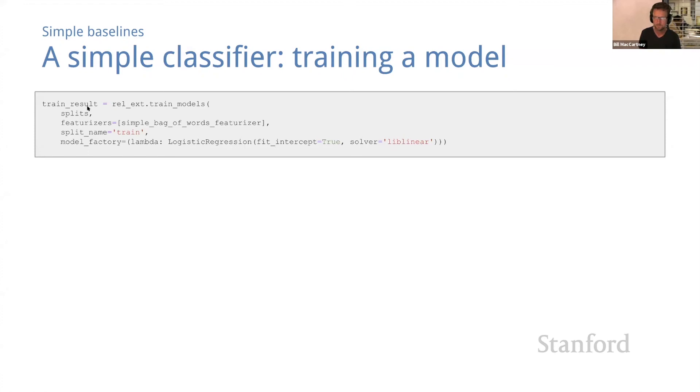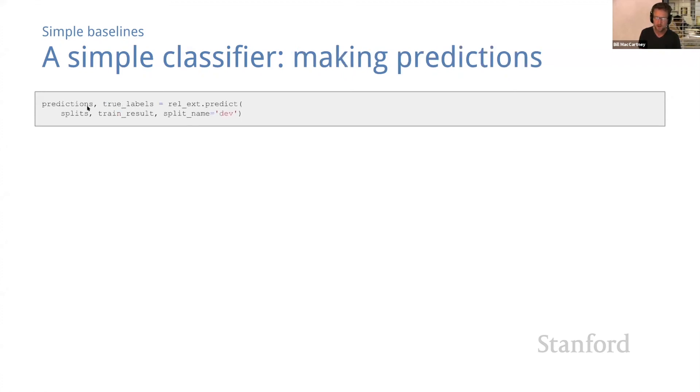Next comes predict. This is a function that takes as arguments a dictionary of data splits, the output of train_models—that train_results thing—and the name of the split on which to make predictions. And by default that's dev. And it returns two parallel dictionaries: one holds the predictions grouped by relation, and the other holds the true labels grouped by relation.